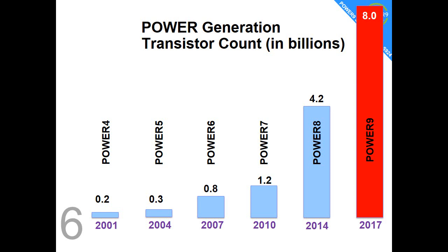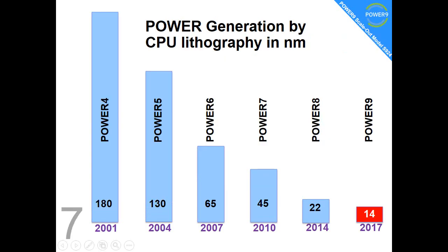All those transistors give us bigger data caches for performance, faster I/O in and off the processor, and faster CPUs.